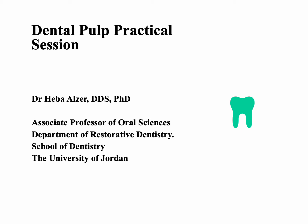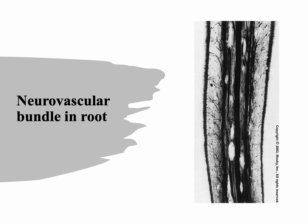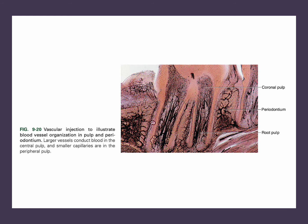Welcome to the second part of the dental pulp practical session. In this part we will be discussing the blood vessels and the nerve supply of the dental pulp. As we discussed in the theoretical lecture, the neurovascular bundle, which contains the nerve and the blood vessels, comes from the apical foramina of the tooth, entering the root and then giving branches in the crown.